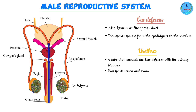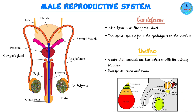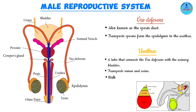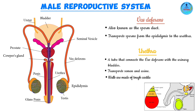The urethra transports both semen and urine through the penis. Semen is simply a collection of the fluids produced by the accessory glands together with the sperm cells. The walls of the urethra are made of tough cartilage, which ensures that it remains open at all times and does not collapse, allowing for the passage of urine and semen.